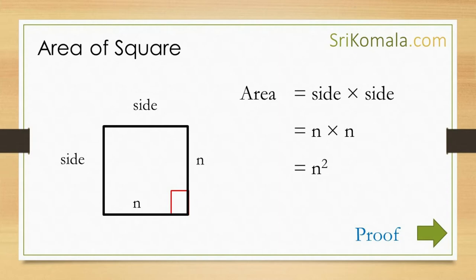We may have already known that the area of a square can be calculated as side times side, or n times n. The formula can also be stated as n squared. The question is, how do we prove the fact that the area of a square is side times side? This will be discussed throughout the video. So stay tuned, and please subscribe.